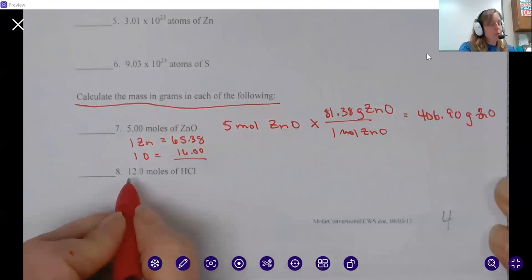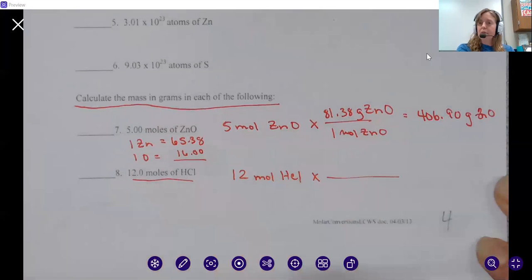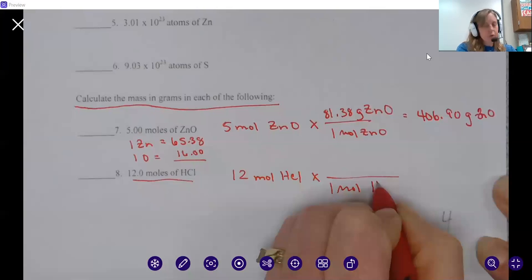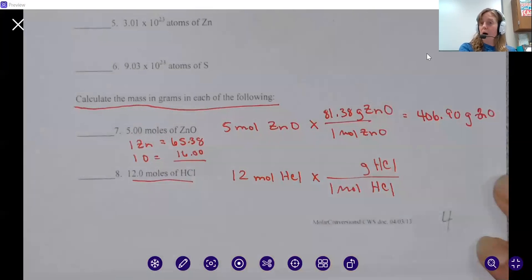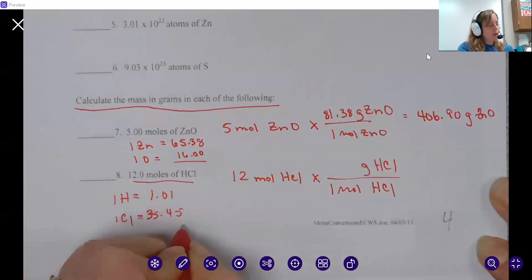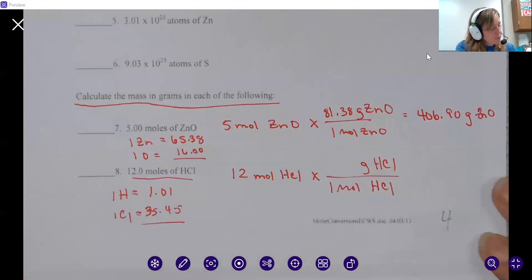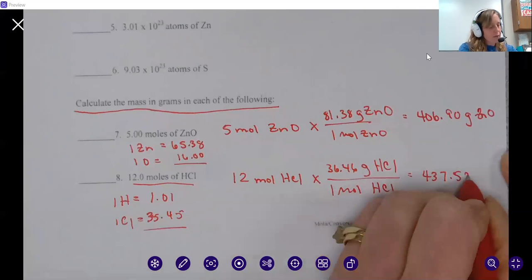The next problem says I have 12 moles of HCl. How many grams of HCl do I have? Once again, one mole of HCl goes on the bottom and we need grams of HCl. We have to calculate that because it's a compound, not an element. I have one hydrogen and one chlorine. Hydrogen is 1.01 and chlorine is 35.45. I add those together and it gives me 36.46. Now I take 12 moles times 36.46, which gives me 437.52 grams of HCl.